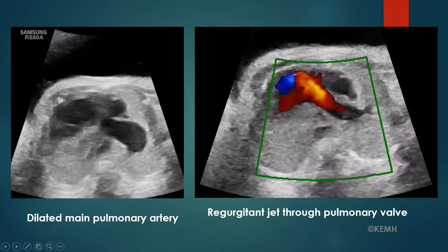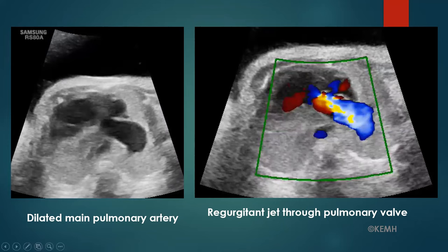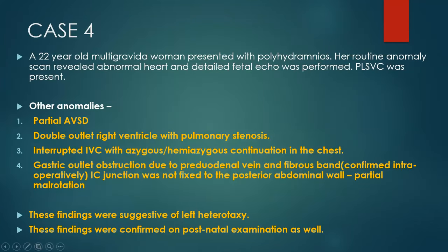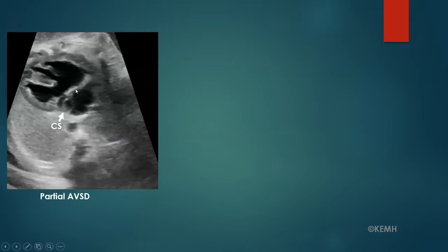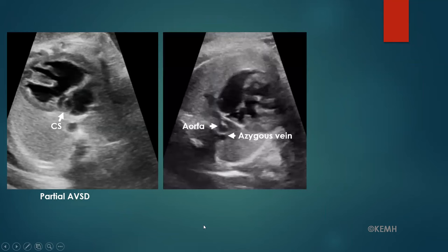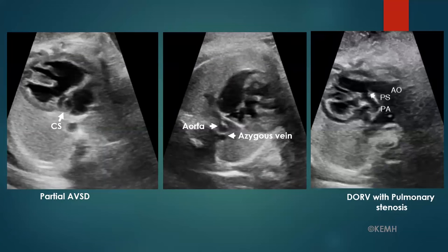DiGeorge syndrome was also suspected in the fetus, but the mother declined invasive testing. Case 4 was a 22-year-old multigravida referred for polyhydramnios and PLSVC. The fetal heart showed an inlet VSD with absent septum primum, suggestive of partial AVSD with a dilated coronary sinus. The IVC was not seen; instead, another vessel was noted posterior and to the left of the aorta at the level of the 4-chamber view, representing azygous continuation of the IVC.